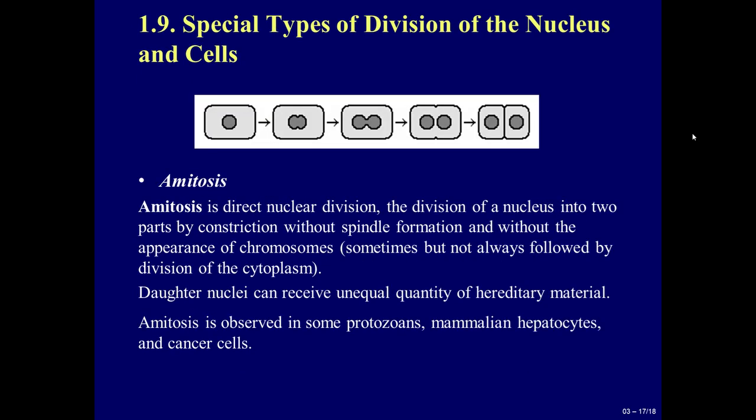Special types of division of the nucleus and cells — amitosis: amitosis is direct nuclear division, in contrast to mitosis. Amitosis is a division of a nucleus into two parts by constriction, without spindle formation and without the appearance of chromosomes. Sometimes, but not always, followed by division of the cytoplasm. Daughter nuclei can receive unequal quantities of hereditary material. Amitosis is observed in some protozoans, mammalian hepatocytes, and cancer cells.